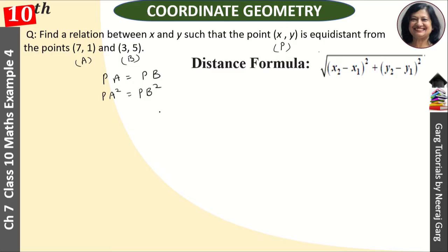So we have PA equal to PB. For PA, we have (x - 7)² plus (y - 1)². And for PB, we have (x - 3)² plus (y - 5)².